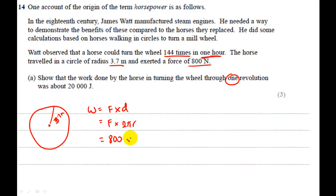So the force was 800. The 2π and the radius is 3.7. Okay, so a quick calculation gets us 18598.229 joules. Okay, I'm not going to put that in as my answer. I'll just round it down to 18598 joules. And that is close enough to 20,000 joules that I'm satisfied I got the answer correct.